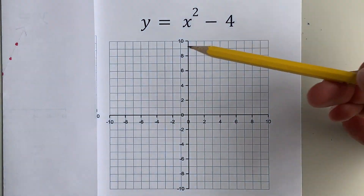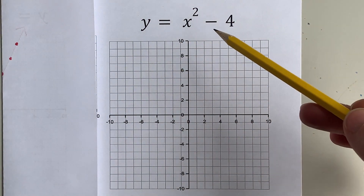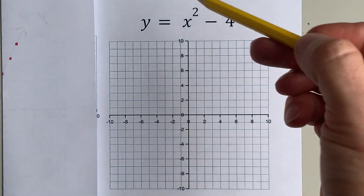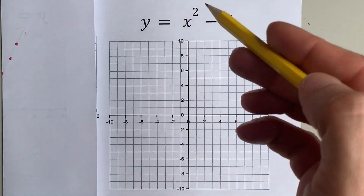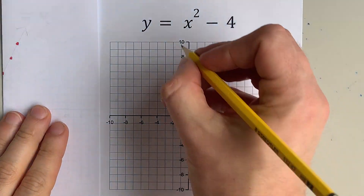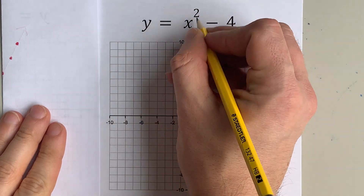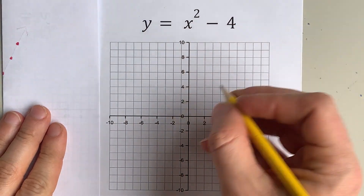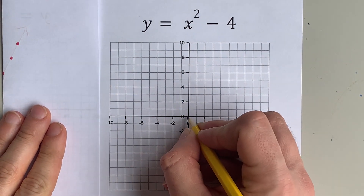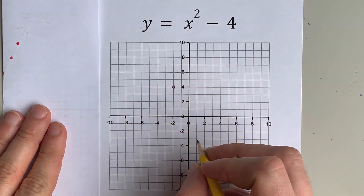We are going to graph y equals x squared minus 4. Now there are many, many ways to do this. The way I'm going to show you right now is to start with y equals x squared, which is probably a shape that you are supposed to have memorized for your math class.